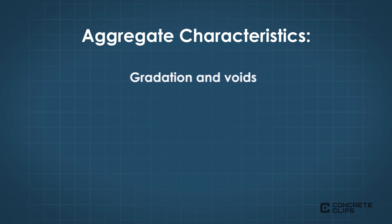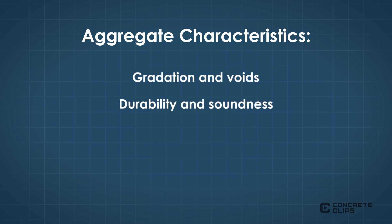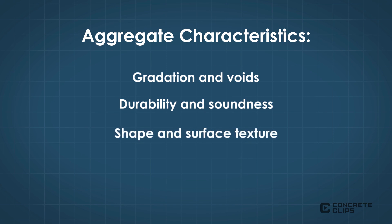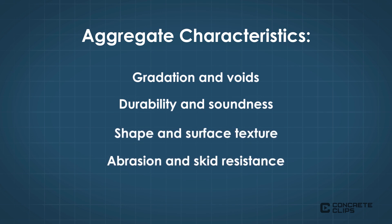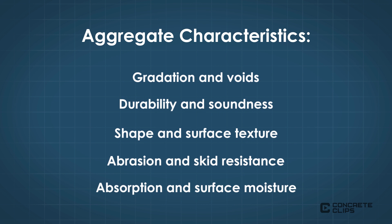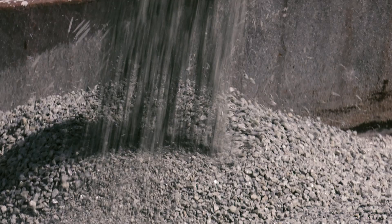Aggregate characteristics that affect concrete properties include gradation and voids, durability and soundness, shape and surface texture, abrasion and skid resistance, and absorption and surface moisture.